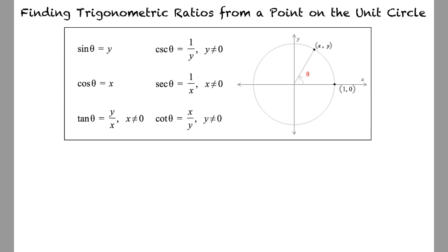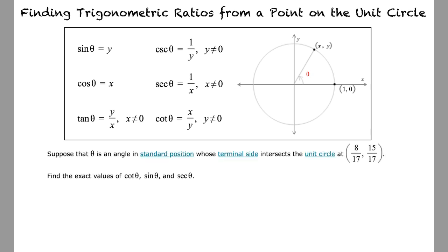I think I'm starting to understand how to identify trigonometric ratios, but can we do a quick example just to be sure? Sure. Let's look at the example problem. Suppose that theta is an angle in standard position whose terminal side intersects the unit circle at (8/17, 15/17).